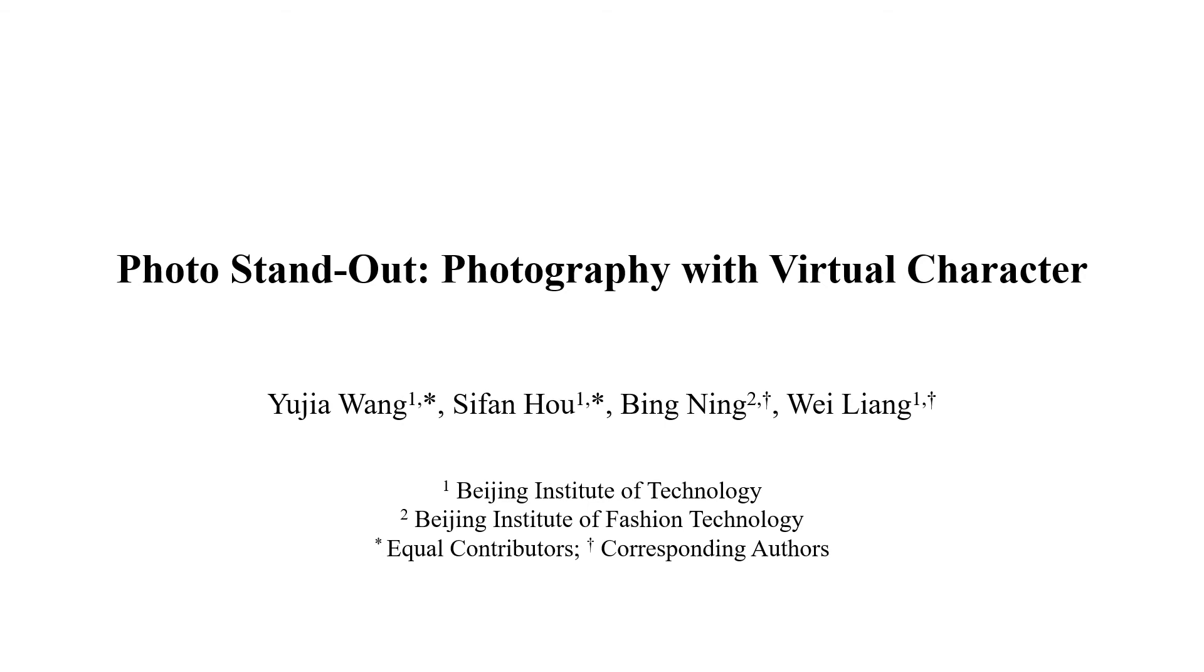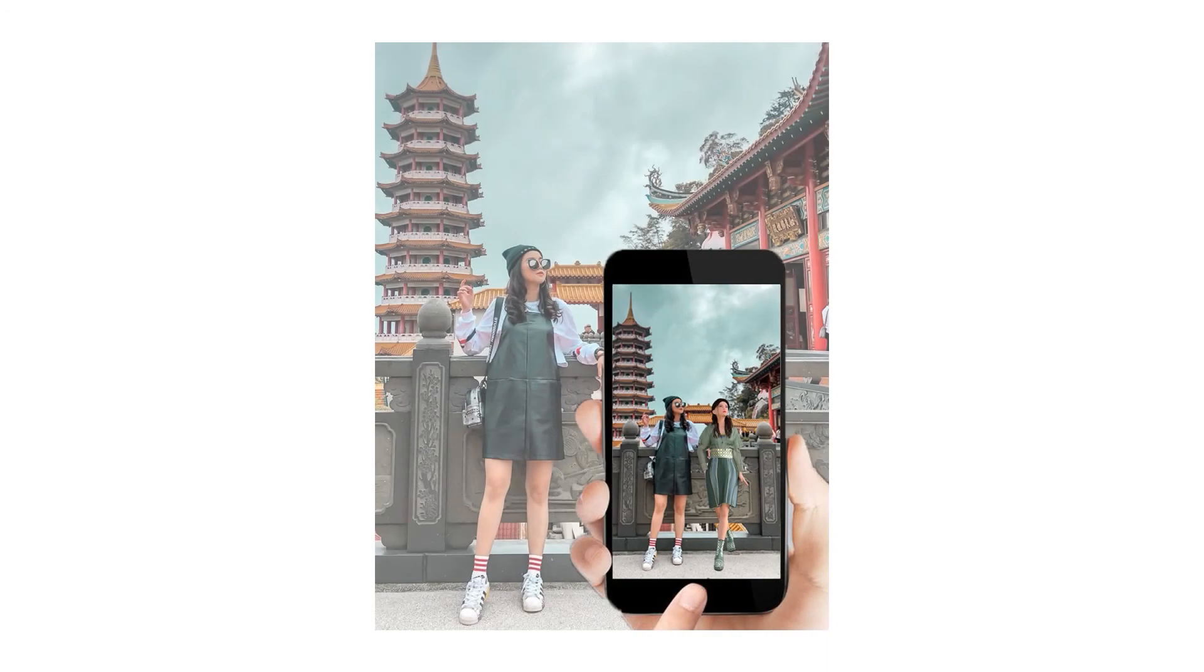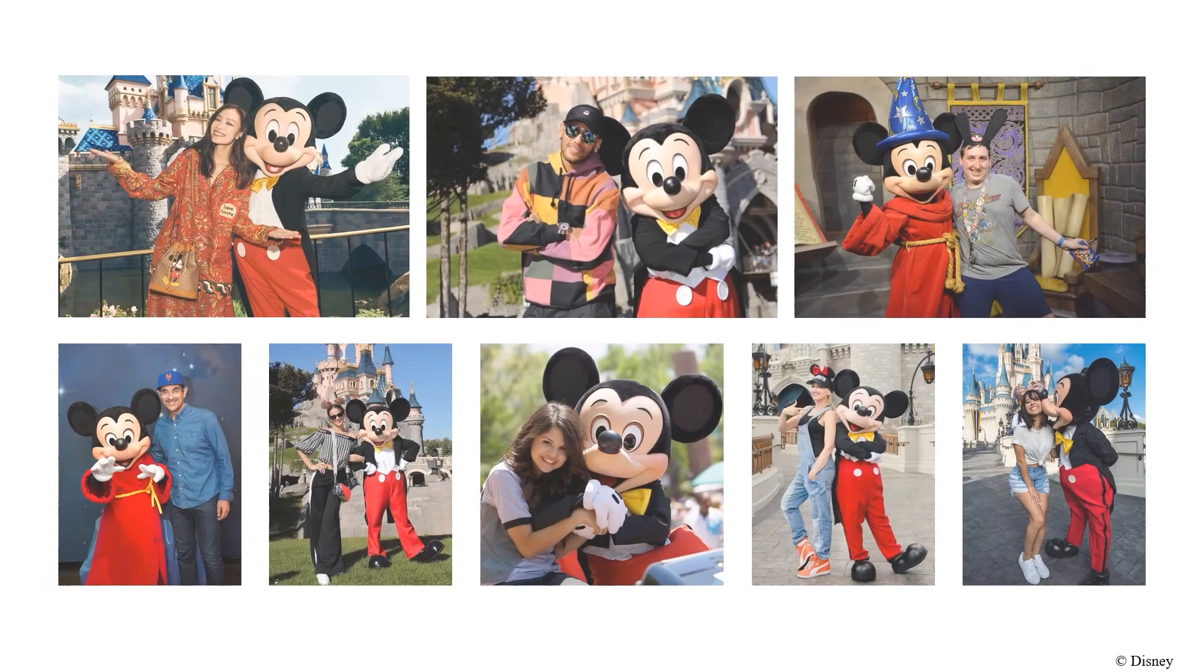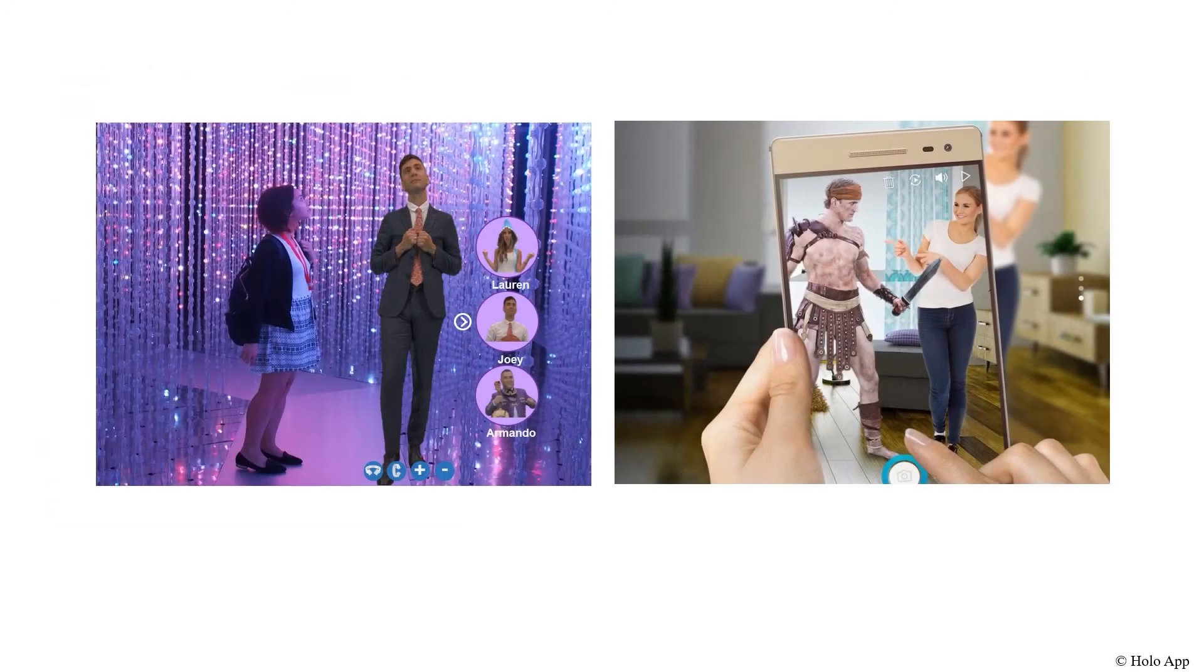We present an automatic approach to synthesize poses for virtual characters according to the user's pose, thus obtaining a realistic and vivid photo. Most people like taking photos with iconic characters in different scenes, such as taking a fantastic photo with Mickey Mouse.